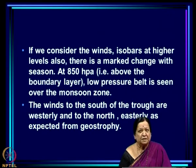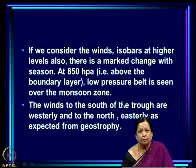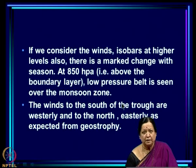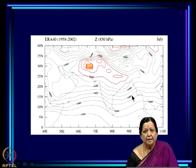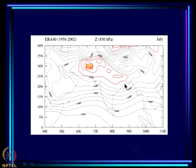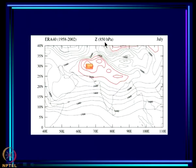If we consider winds and isobars at higher levels, there is also a marked change with season. These isobars are from the reanalysis by the European Centre — we can now generate with the computer the kind of charts which used to be drawn by hand. What you see here is a low pressure belt over the monsoon zone at 850 hPa, which is about 1.5 kilometers above the ground, pretty much over the surface trough.